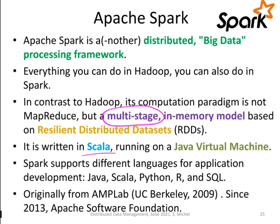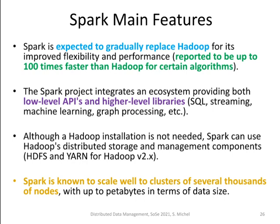Spark is written in Scala, hence running on the Java Virtual Machine. It also supports different languages for application development, like Java, Python, and R, and also allows writing SQL queries. It was developed in 2009 at UC Berkeley in the AMP Lab and has been part of the Apache Software Foundation since 2013. Compared to Hadoop, Spark has benefits in terms of flexibility and performance, and is expected to fully replace MapReduce. There is a huge variety of high-level APIs that extend the low-level Spark Core, including SQL support, Spark Streaming, machine learning libraries, and graph processing libraries.